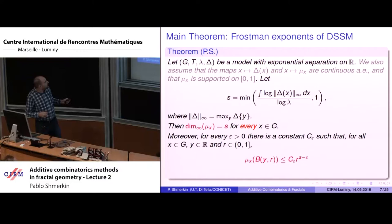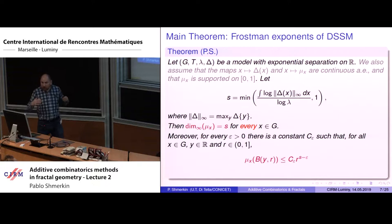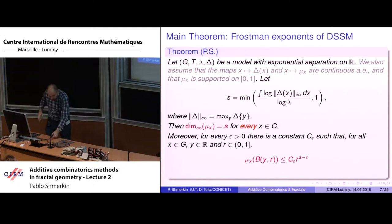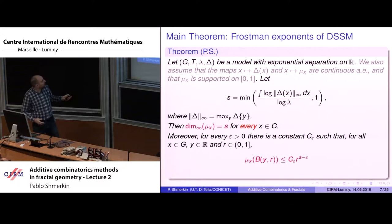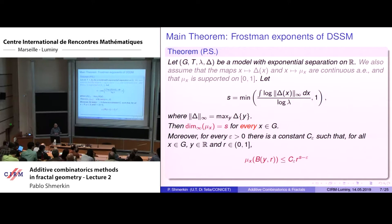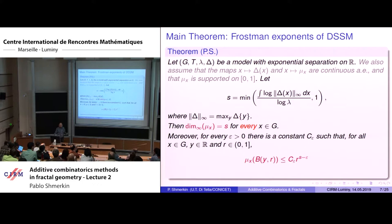What the theorem says is that this is also the Frostman exponent always, under the assumptions, with exponential separation being a much weaker condition than saying all pieces are really separated at every step. The conclusion holds for every x in a uniform way — the Frostman exponent holds uniformly for all elements x of the group. There is a uniform bound for the mass of balls for all x simultaneously; the constant does not depend on x, y, or r.